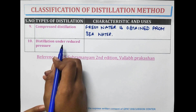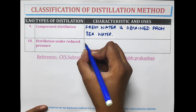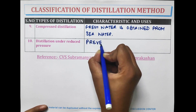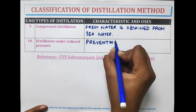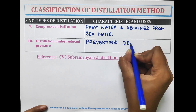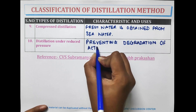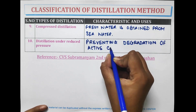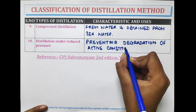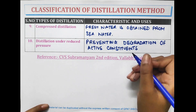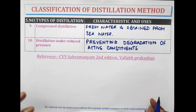Distillation under reduced pressure is used for preventing degradation of active constituents. That's all for the classification of distillation methods.